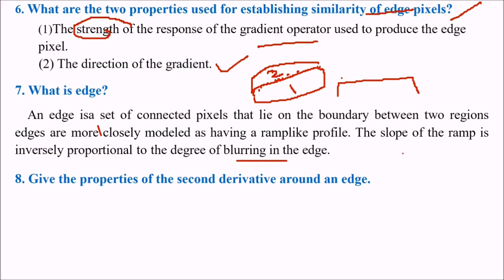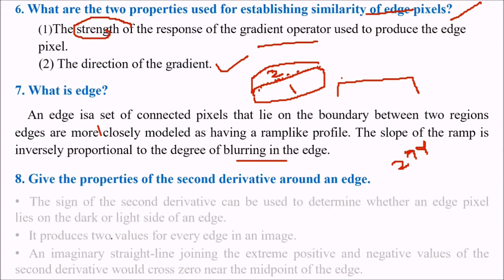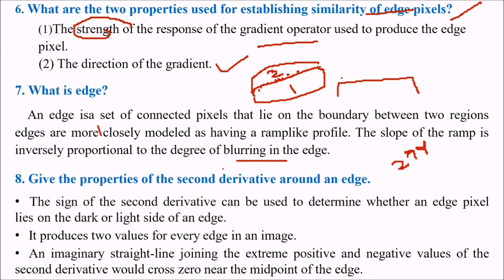Give the properties of second derivative around an edge, second derivative which we thought to do by the Laplacian. The sign of the second derivative can be used to determine whether an edge pixel lies on the dark side or the light side of an edge. And it produces two values for every edge in an image. An imaginary straight line joining the extreme positive and negative values of the second derivative would cross zero near the mid part of the edge. These are the properties of second derivative.